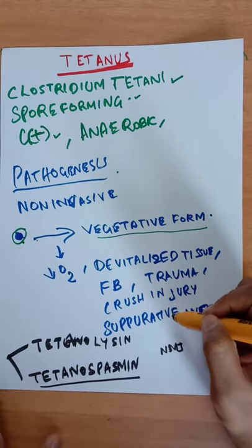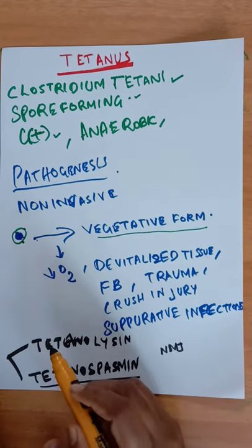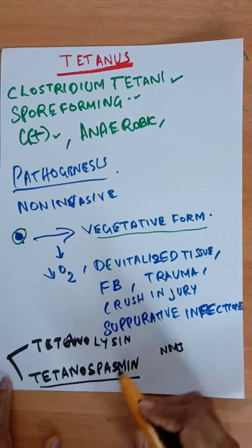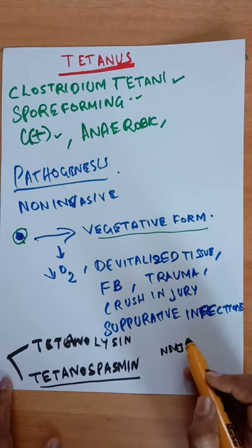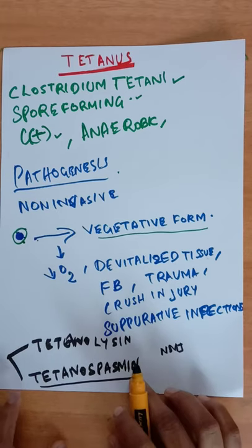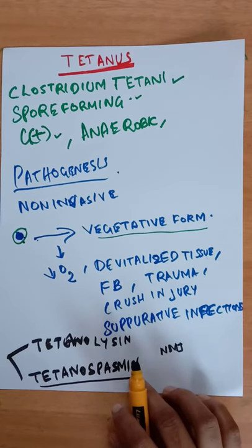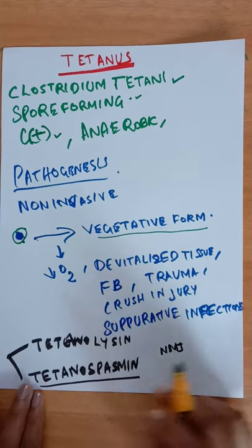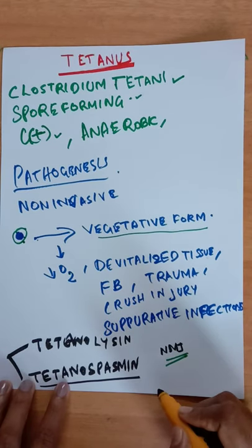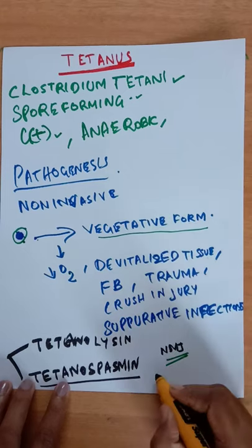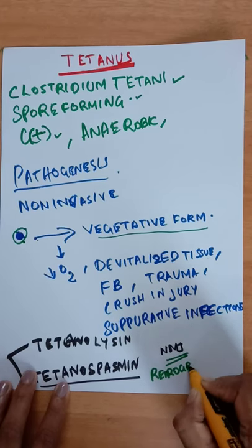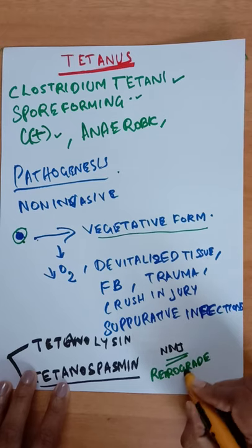About the toxins: there are two types of toxins, tetanolysin and tetanospasmin. Tetanospasmin is the main toxin which is responsible for the manifestations of the disease. It binds to the neuromuscular junction at the site of injury and then undergoes retrograde axonal transport.